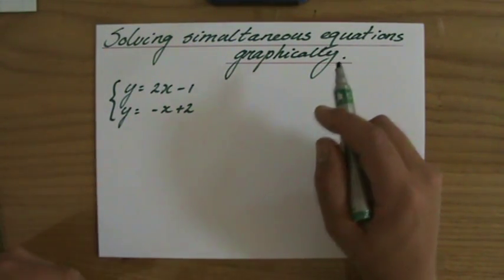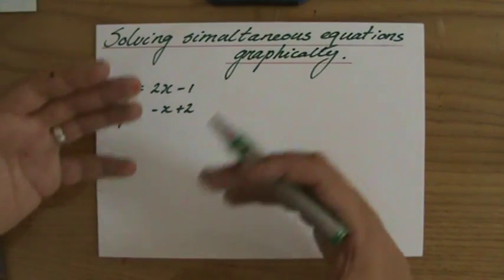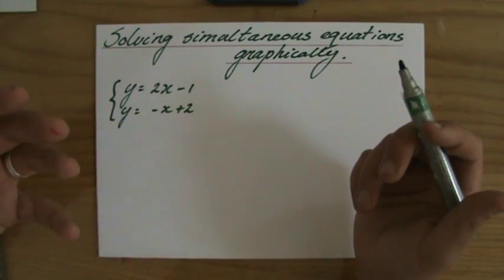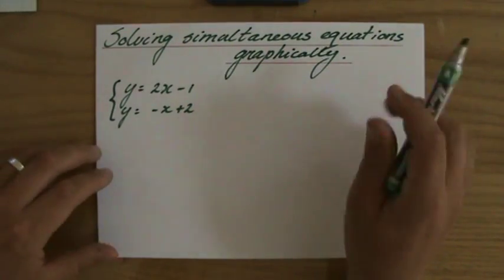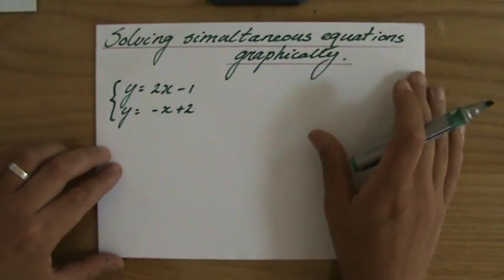If I would have three variables, let's say X, Y, Z, I would need three equations to solve and to find out for which X, for which Y, for which Z would that be true.